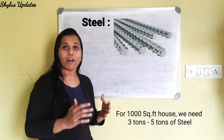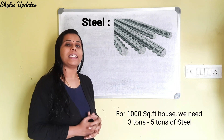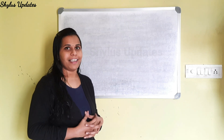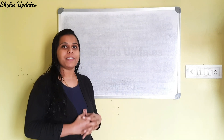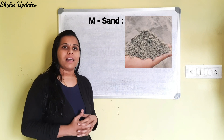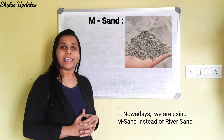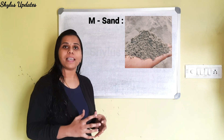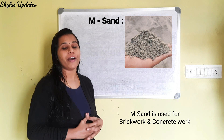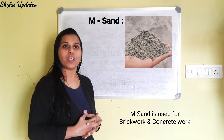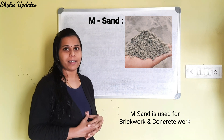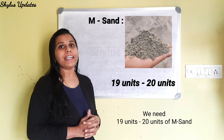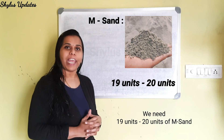For a 1000 square feet house, we need 3 tonnes to 5 tonnes of steel. Nowadays we are using MSAN instead of river sand. MSAN is used for both brickwork and concrete work. We need 19 units to 20 units of MSAN.